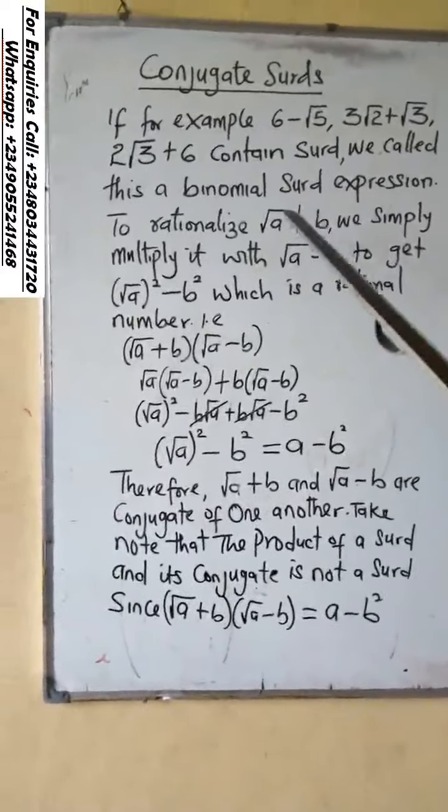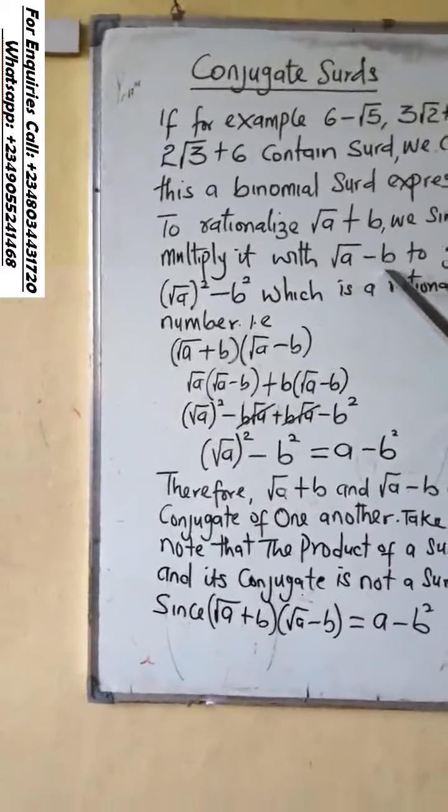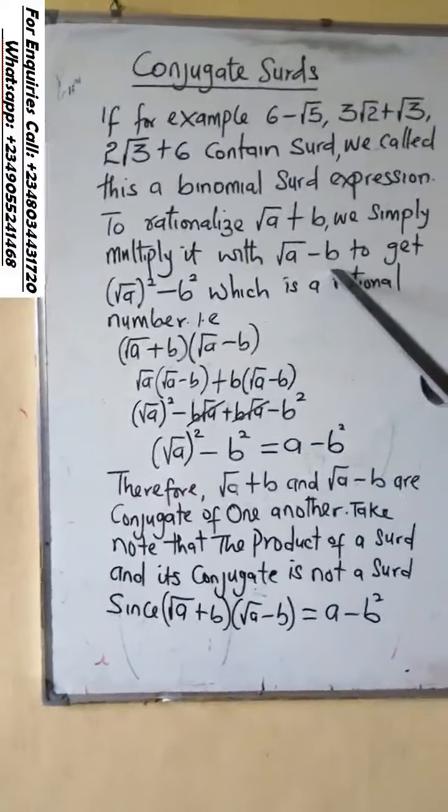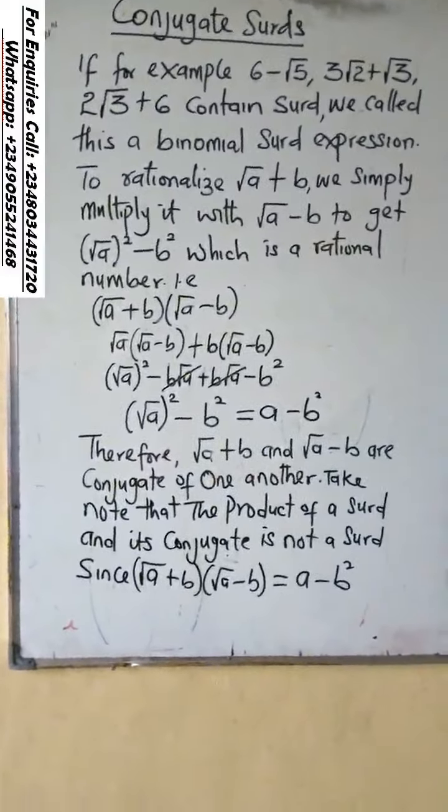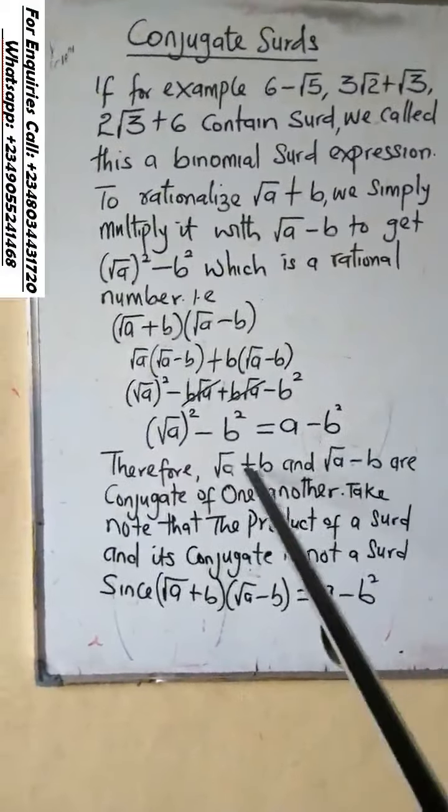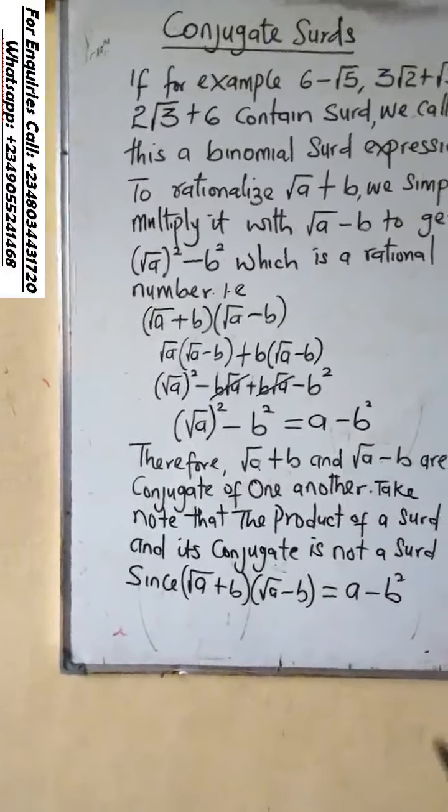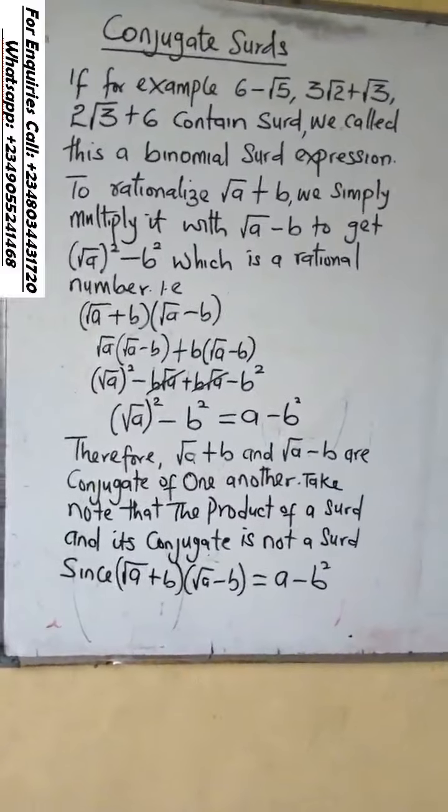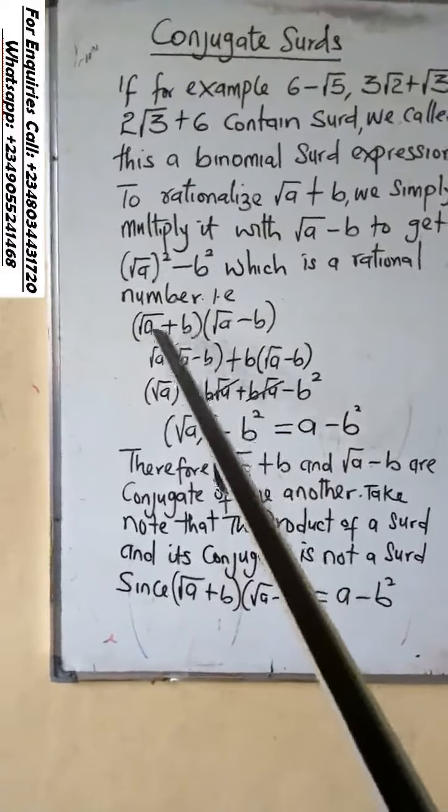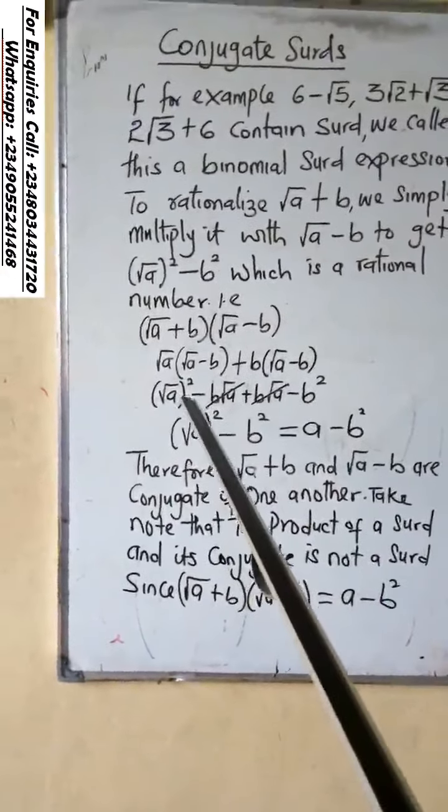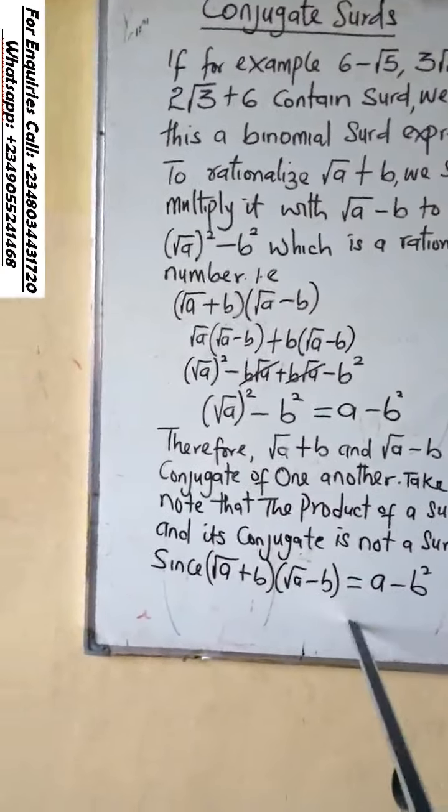Now if you look at this, root a plus b and root a minus b, they are the same thing. The only difference there is the plus and minus. Therefore it means that root a plus b and root a minus b are conjugate of one another. So when you multiply the conjugate, our answer will no longer be conjugate, the way you see it here.